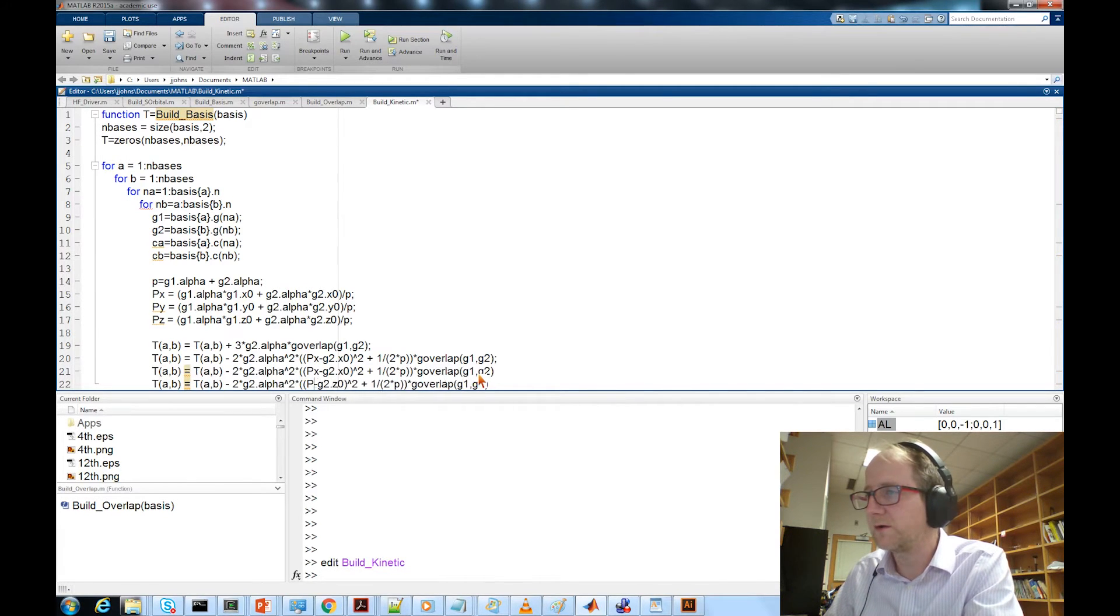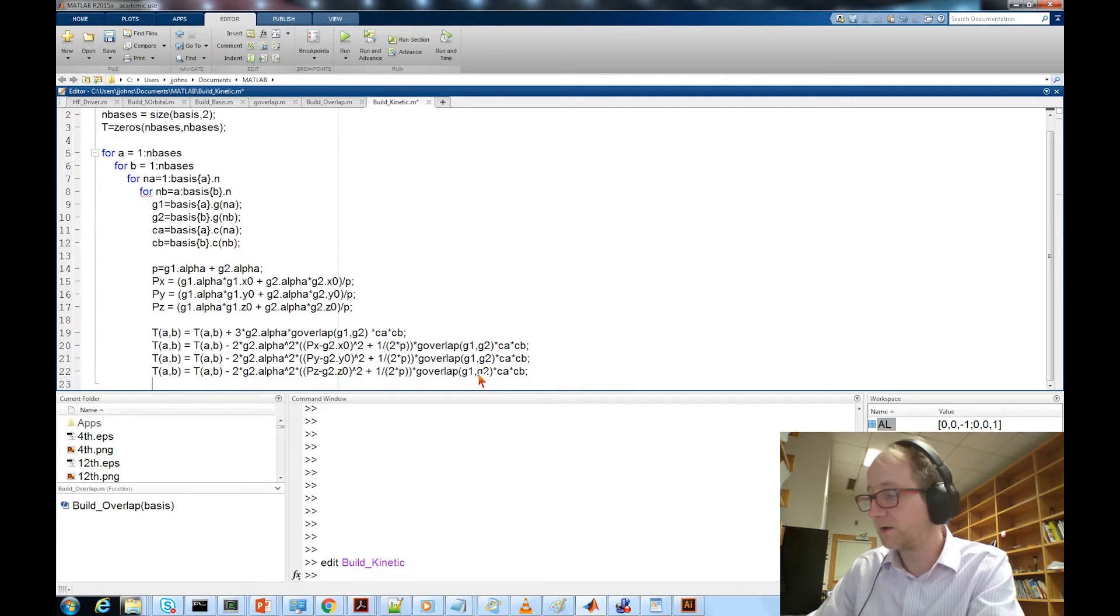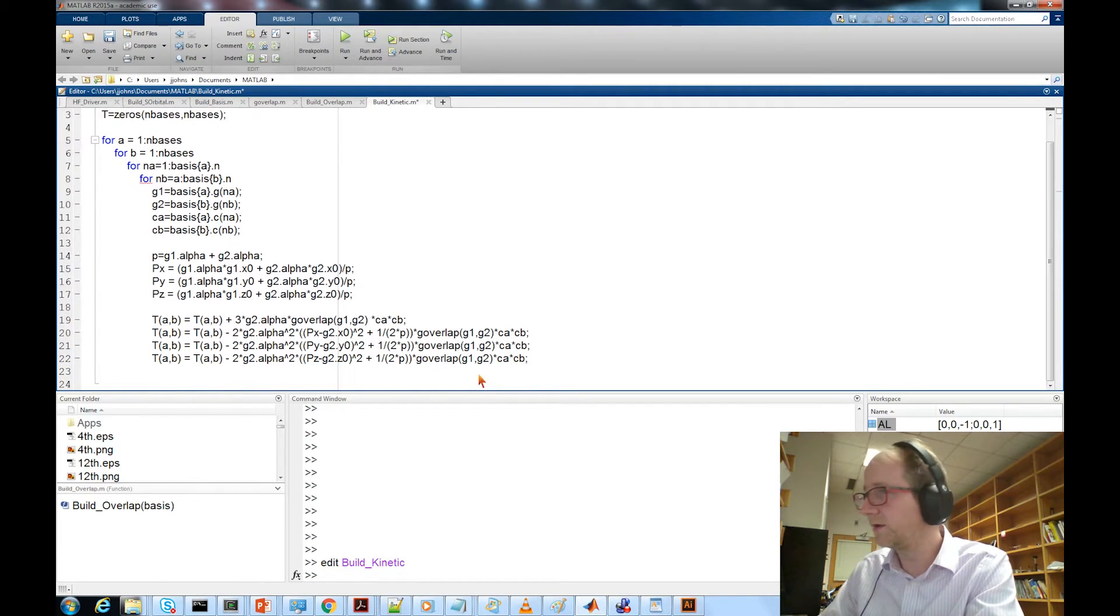Swap px to pz, px to py, and then I'm realizing we're missing one thing, which is we need to multiply each of these by the appropriate contraction coefficients c a times c b, and then that should be it.